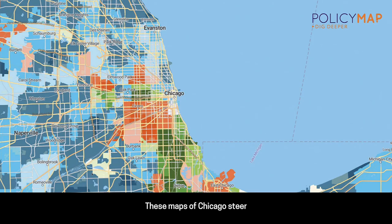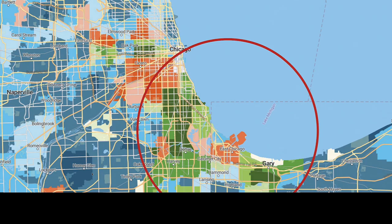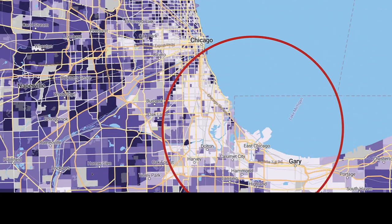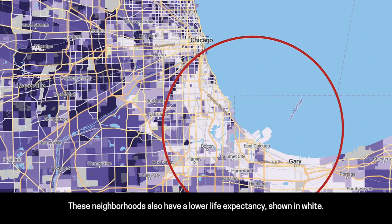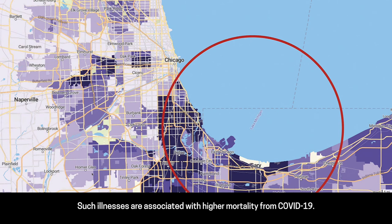These maps of Chicago steer clear of emotionally loaded colors to avoid stigmatizing any group. Neighborhoods in green are predominantly black. These neighborhoods also have a lower life expectancy, shown in white. Dark purple shows high rates of hypertension. Such illnesses are associated with higher mortality from COVID-19.